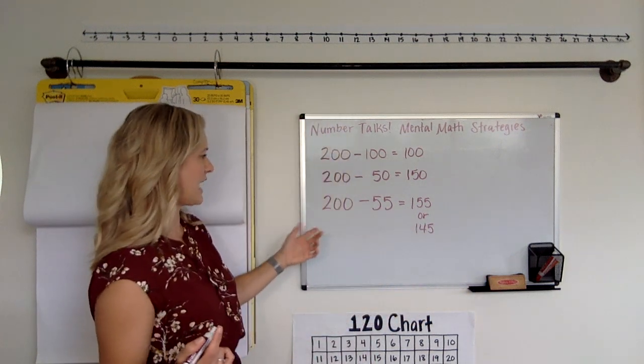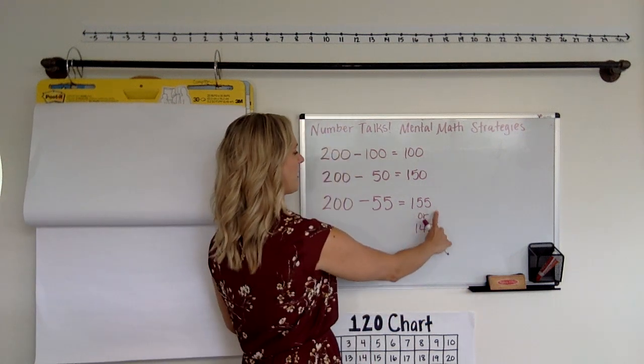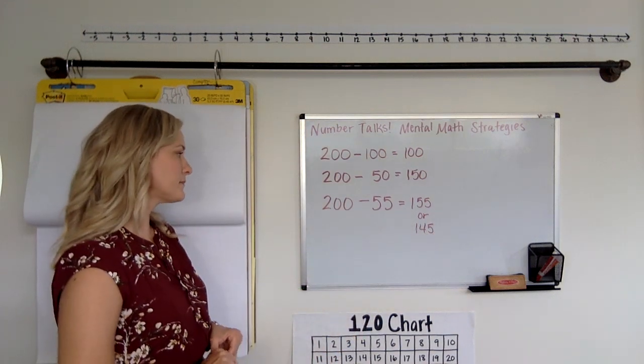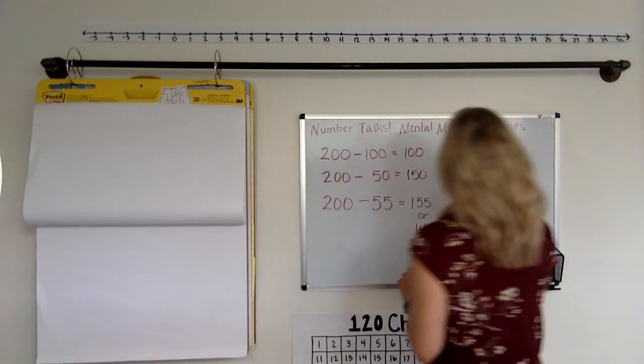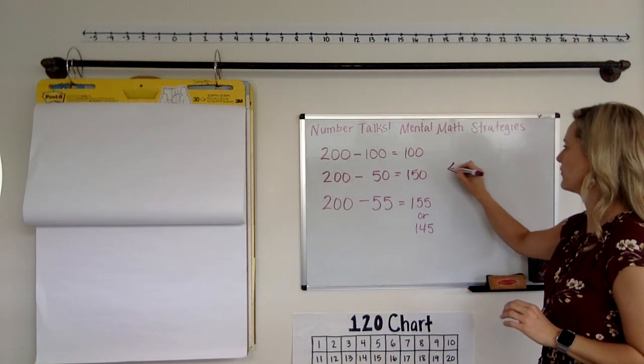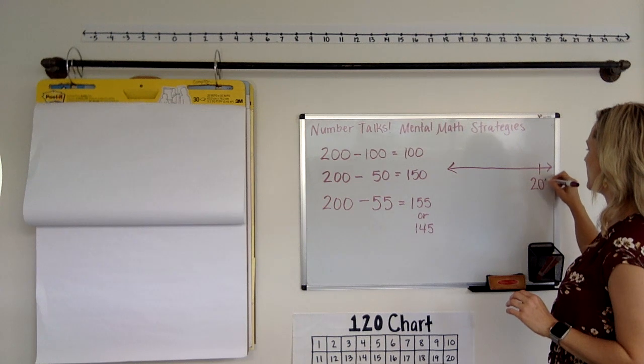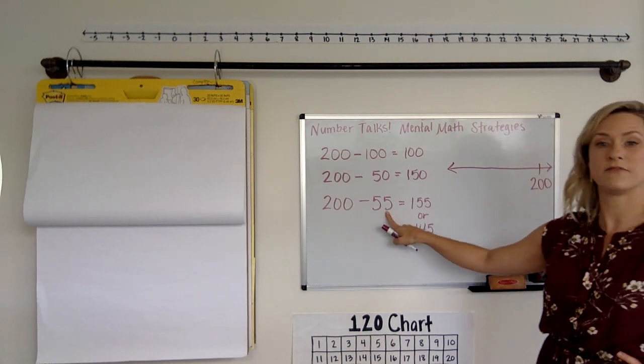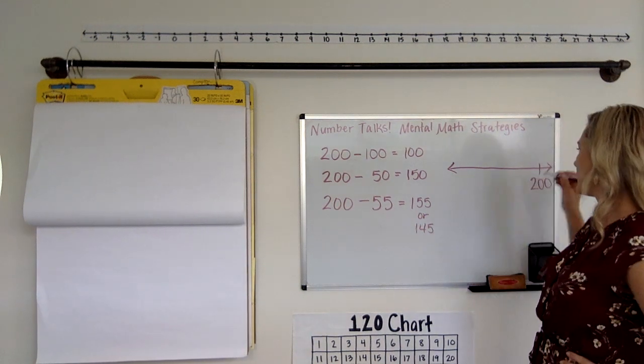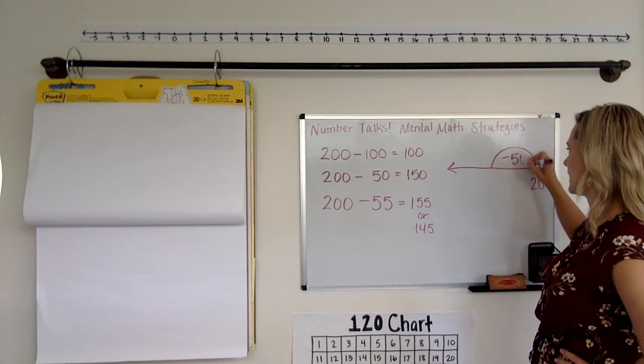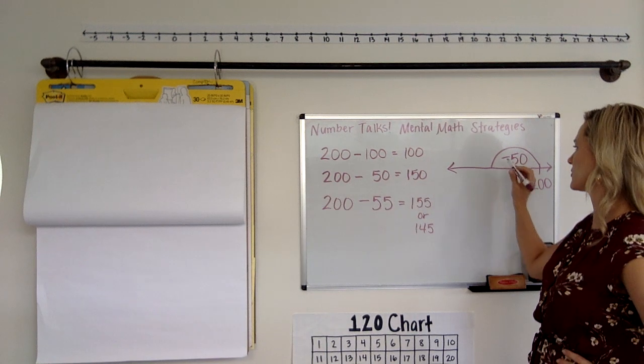So let's find out. What is the actual answer? Is it 155 or is it 145? So if we have 200, let's check it out because I know we've got a lot of number line fans out there. If we have 200 and we're taking off 55, we already knew that 200 minus 50 from the last question was 150.